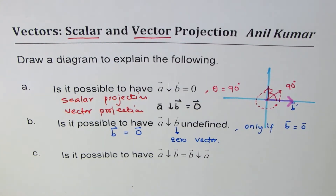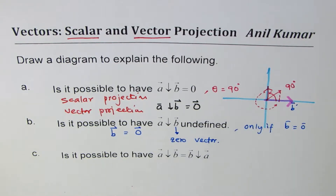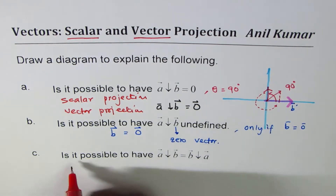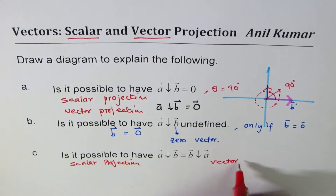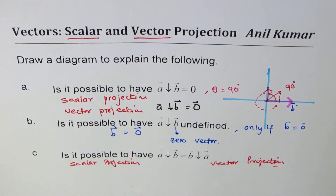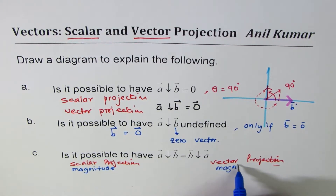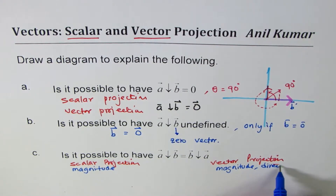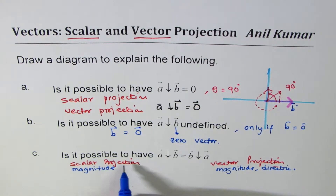For Part C — is it possible to have projection of a on b equal to projection of b on a? Here we will consider two cases: one as scalar projection and the other as vector projection. In scalar projection we are only looking at magnitude, and in vector projection it is magnitude and direction. So we are comparing magnitude in the scalar case and magnitude and direction in the vector case — that makes a huge difference.